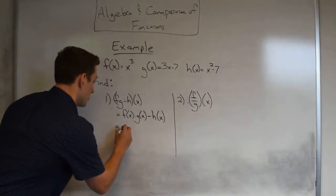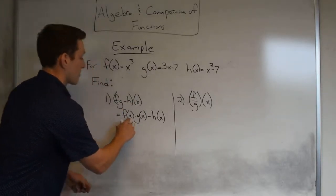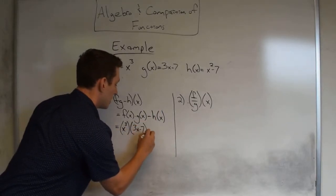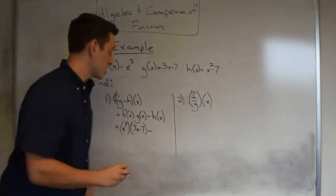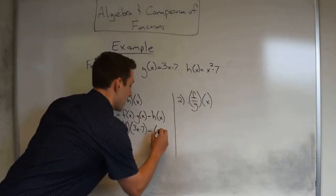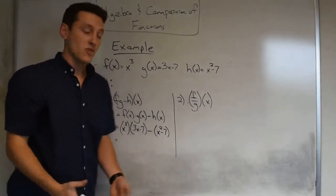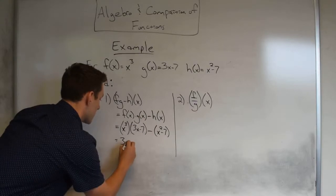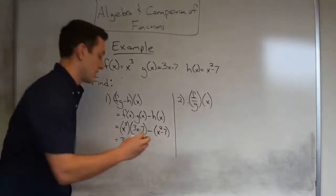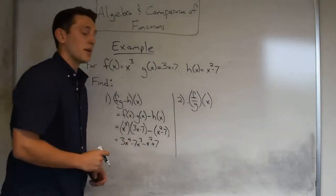From there it's just substitution and simplification. f(x) = x cubed, g(x) = (3x − 7) — put parentheses around each. Then subtract the entire function h(x), so parentheses are important: minus (x squared minus 7). Multiplying gives 3x to the fourth minus 7x cubed, and distributing the negative gives minus x squared plus 7. So the answer is 3x⁴ − 7x³ − x² + 7.